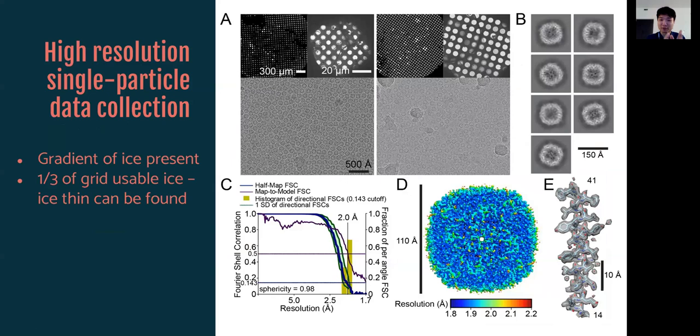So using this device, Back It Up, we are able to produce very consistent ice now. So here you can see using apoferritin, we can get grids that have large good real estate, more than one-third of the ice is actually usable, and across multiple different grids actually. Here we show two, but from all that we made like three or four, they have pretty similar ice distribution for the apoferritin, which we're able to produce good 2D class averages that can give a two-angstrom map, which you can see water molecules here. So we show here that the Back It Up device is amenable to producing high resolution single particle datasets.